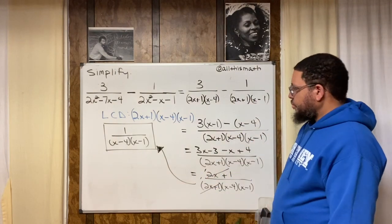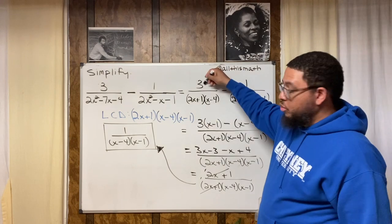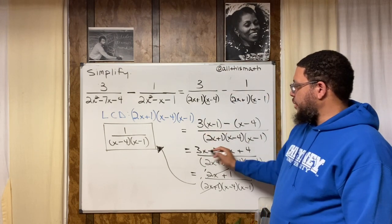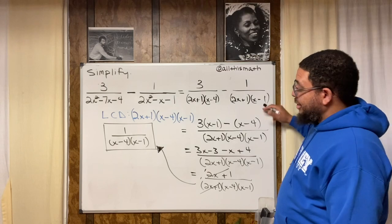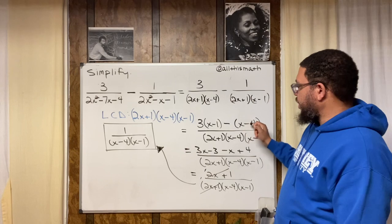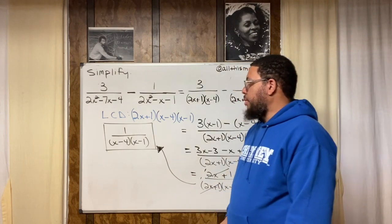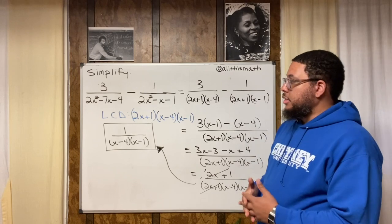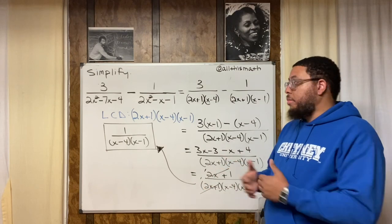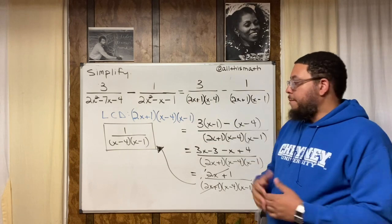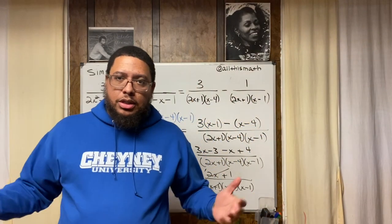From there, you divide the LCD by the original denominator, and whatever quotient you're left with, you multiply by the original numerator. That's how we got 3x minus 3 from the first fraction and the minus x minus 4 from the second. Then you distribute the negative 1 and combine like terms. This is a good skill to know — simplifying or adding and subtracting rational expressions. It requires a lot of skills, but you can always practice. Go find some problems like this, get some practice, and I'll catch up with you on the next video. Shout out to Cheney University. Peace.